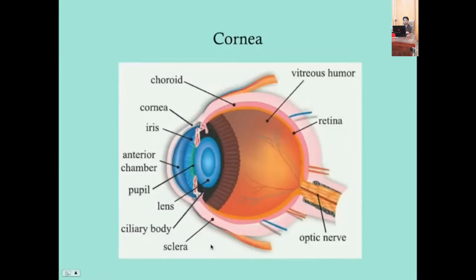The cornea is consistent with the sclera, which is the white of the eye, but the cornea is clear. That's important because it covers the pupil and iris — you need something clear covering your pupil for light to adequately reach the retina. The cornea is a multi-layered tissue covering the anterior chamber, including the iris, pupil, and anterior ciliary body.